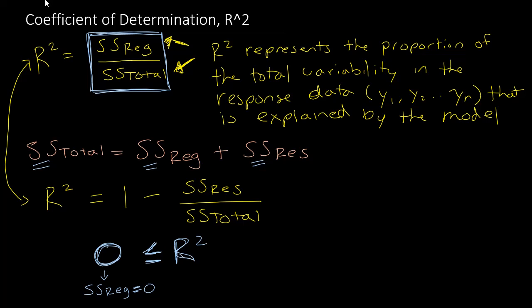When r-squared equals 0, it means the variability explained by the regression is 0 — basically the regression didn't explain the variability at all. This means the model was a bad model, or equivalently the slope term equaled 0. This represents a poor fit.